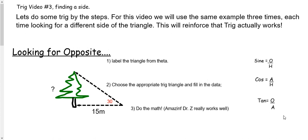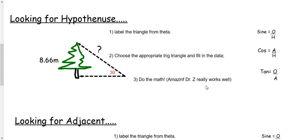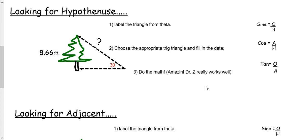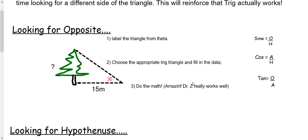Now we're going to follow the same three steps that we had before: label the triangle, choose the appropriate trig, and then do the math. This is the part where we learn how to actually do the math. We're going to do the same example three different ways — three different sides — so you can see how things will work.